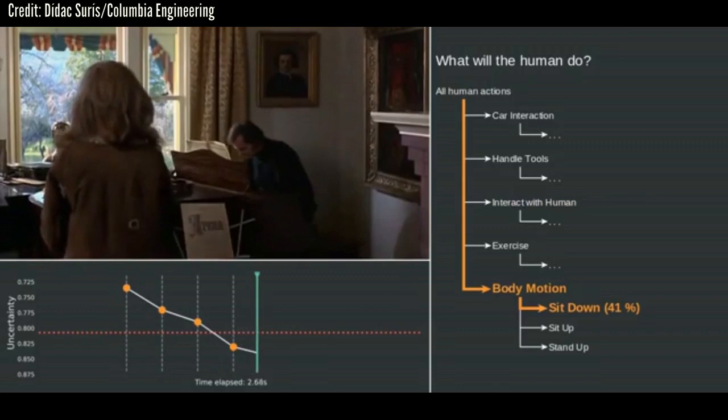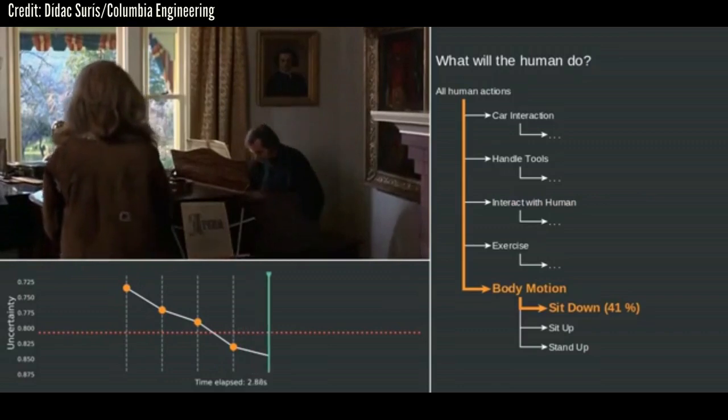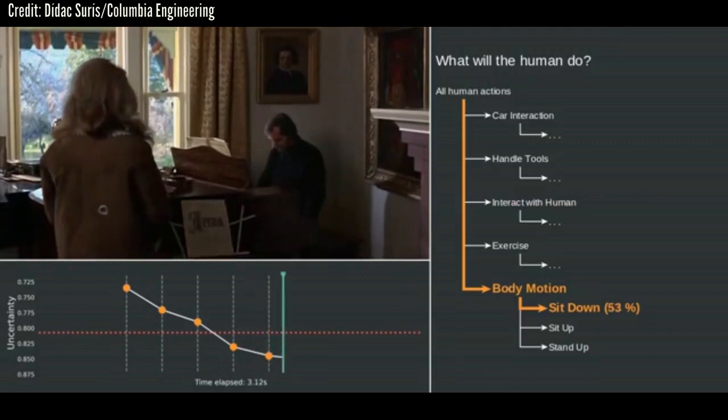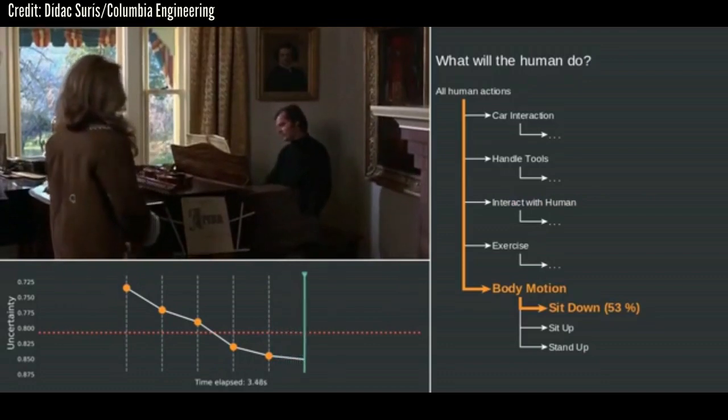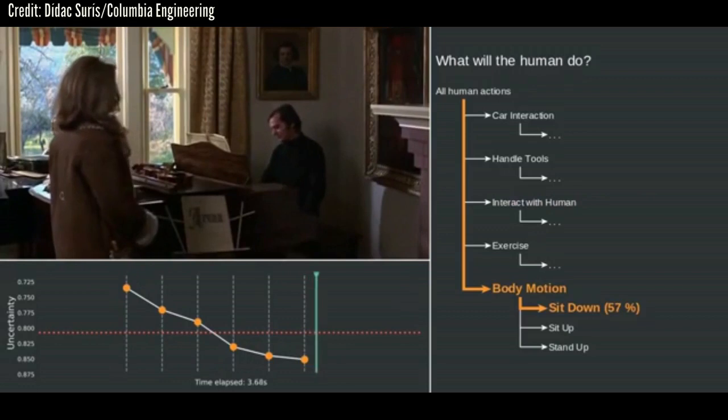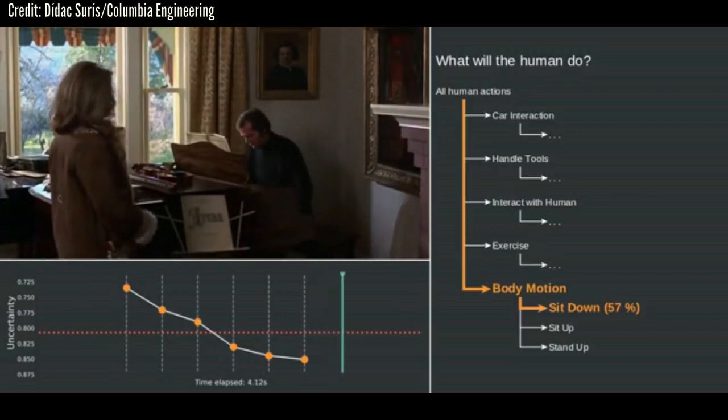The mathematical framework developed by the researchers enables machines to organize events by how predictable they are in the future. For example, we know that swimming and running are both forms of exercising. The new technique learns how to categorize these activities on its own.